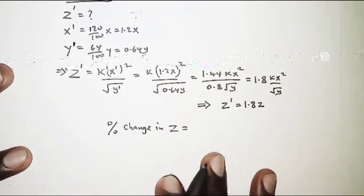So the new value here is 1.8z minus z all over z times 100. And that is, when z is factored out we'll have z into 1.8 minus 1 all over z times 100. So z and z will cancel, and when they cancel we'll have 1.8 minus 1, that is 0.8 times 100.